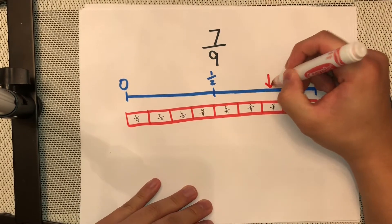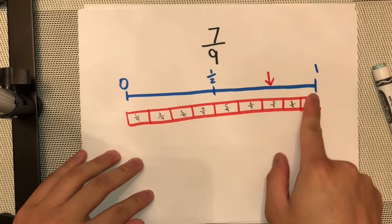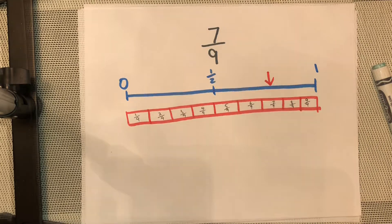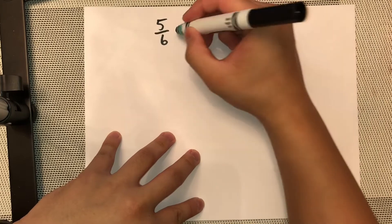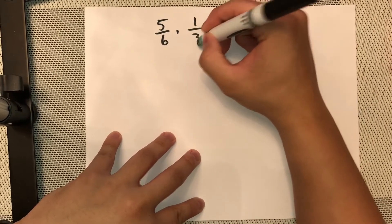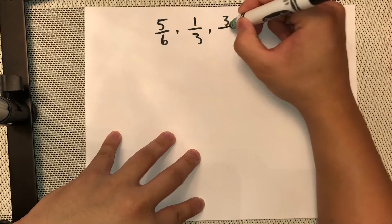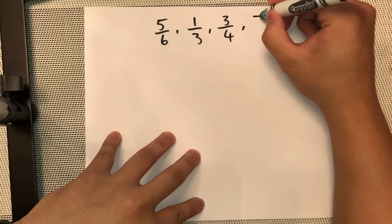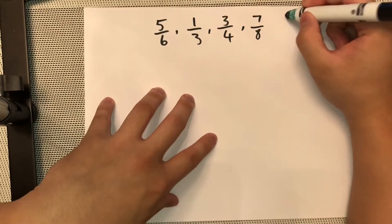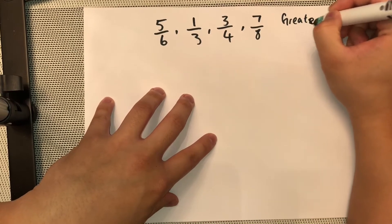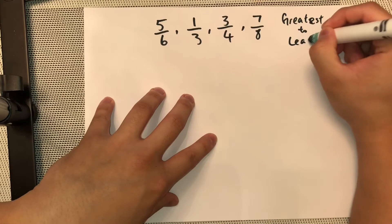So my seven ninths is here — it's definitely closer to 1. Now, what if I'm trying to rank my fractions from greatest to least? This is part of your homework, and this will help you with that. Let's say I have these fractions: 5/6, 1/3, 3/4, and 7/8. How do I rank them from greatest to least?